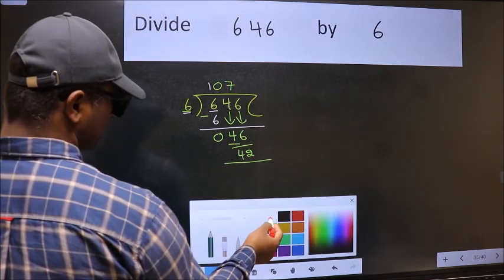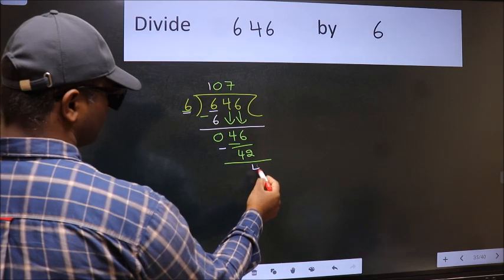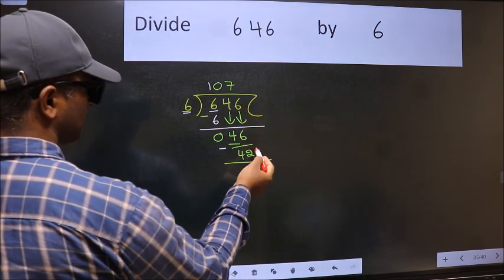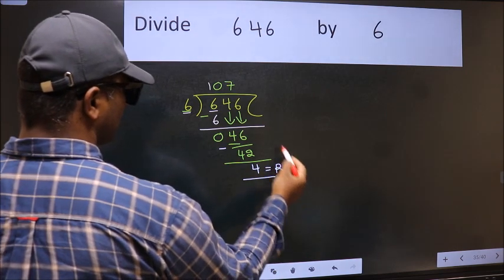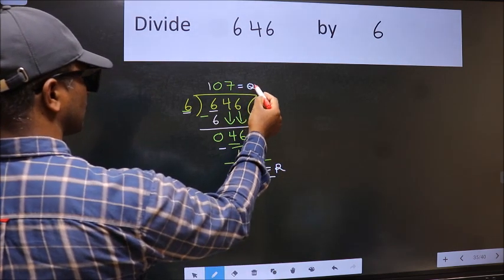Now we should subtract. We get 4. No more numbers to bring down, so we stop here. This is our remainder and this is our quotient.